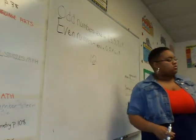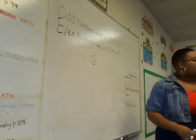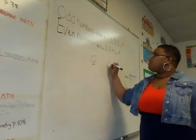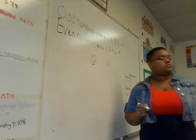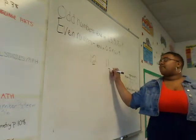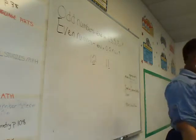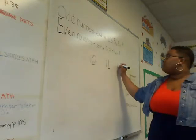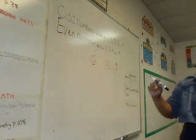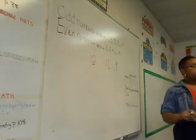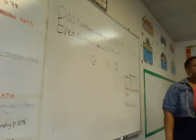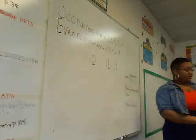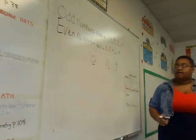Let's look at the next set of counters — number two. How many counters do we have on number two? Eleven. So is that an odd or an even number? Odd. Good job. In the next set of counters, number three has nine counters. So is this odd or even? Odd. Good job.